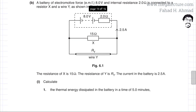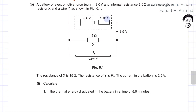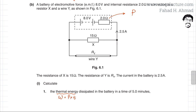The next part asks: calculate the thermal energy dissipated in the battery in a time of 5 minutes. Thermal energy is work done, and work done equals power multiplied by time. The formula for power is I²R, so thermal energy equals I²R multiplied by time — where time is 5 minutes, which is 5 × 60 seconds.